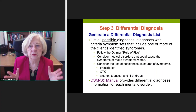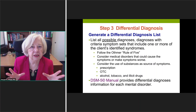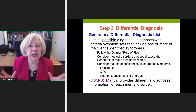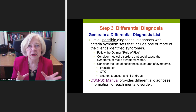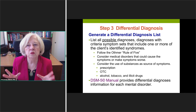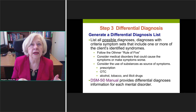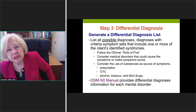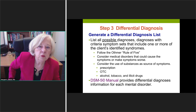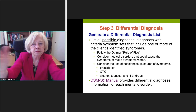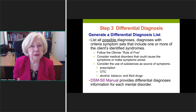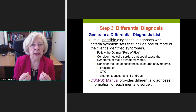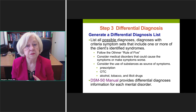Let me talk about that first list. This is a list of any diagnosis that's possible — any diagnosis with a criteria set and symptoms that would include one or more of this client's identified syndromes. In this case, remember with Roger, we've identified trauma symptoms, depression symptoms, and some anxiety symptoms.